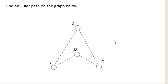So we want to find an Euler path on this graph. Now an Euler path is a path, and remember, a path means that it goes from one point to another, not necessarily returning to the same point.